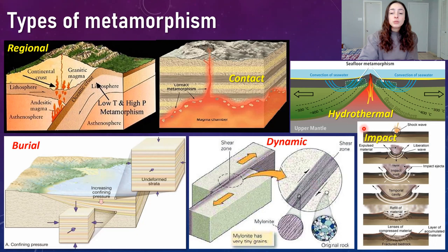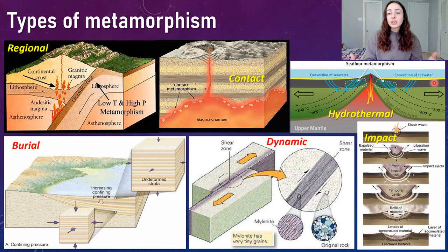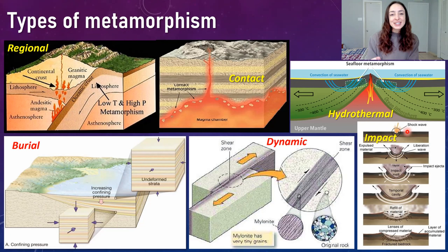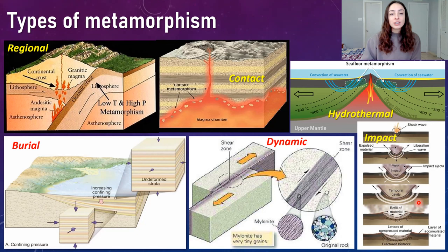Hydrothermal metamorphism is caused by convection of hot hydrothermal fluid through newly formed upper oceanic crust, where water reacts with igneous minerals like feldspars, pyroxenes, and amphiboles, transforming them into micas and clays. Impact metamorphism, as its name suggests, is caused by the extremely high temperatures and pressures upon meteorite impact. It's very localized but produces specific and diagnostic metamorphic textures.